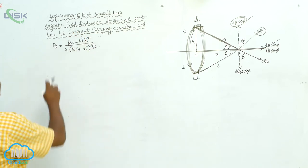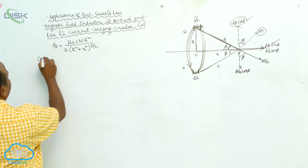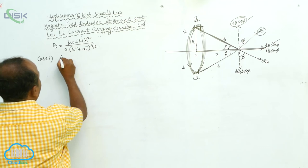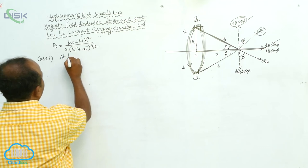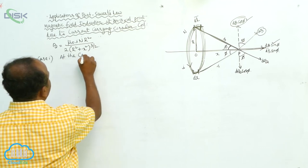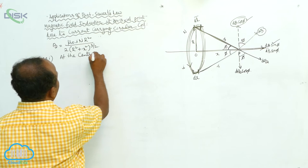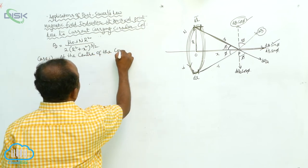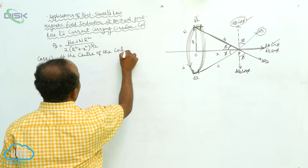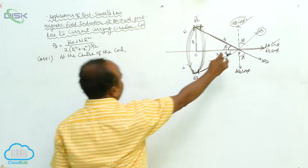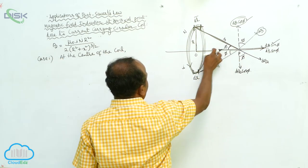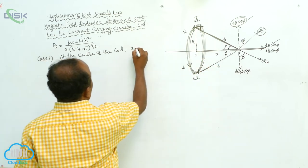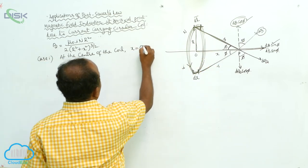Case 1: At the center of the coil. At the center of the coil, the point P is at the center, so x is equal to 0.